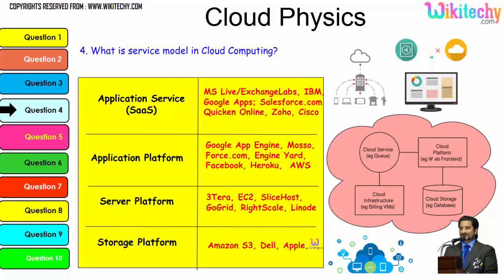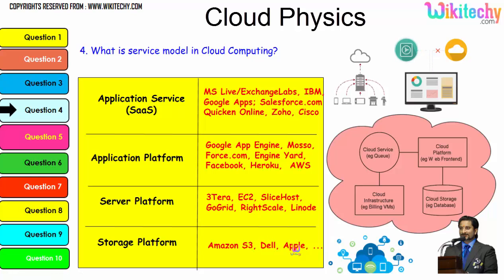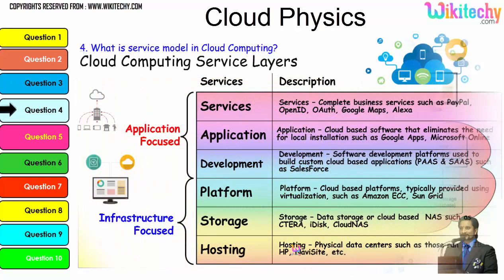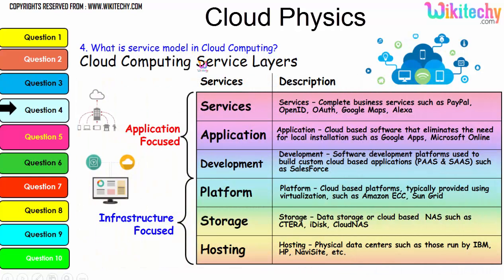Digging further into the service model, the typical examples are: application service, application platform, server platform, and storage platform — the storage platform is provided by Amazon S3, Dell, and Apple. The important service layers are services, application development platform, storage, and hosting. These are important services that will also be asked about in cloud computing interviews.